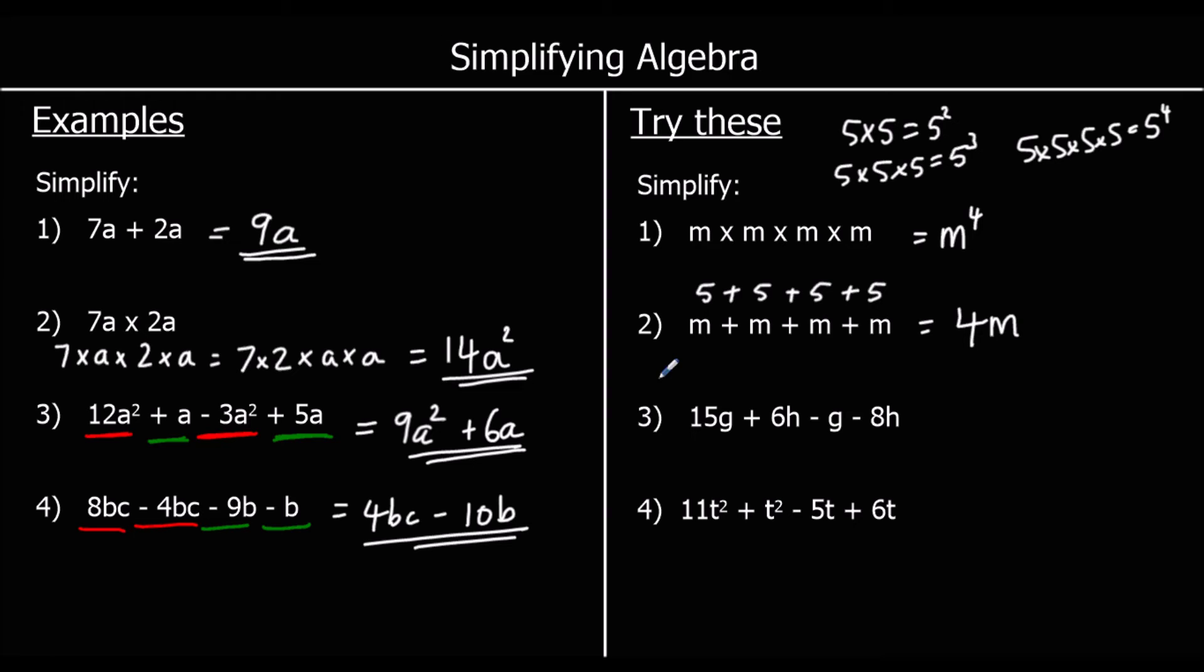Question 3, we're collecting like terms. So we've got G terms and H terms. We've got 15G take away 1G, which is 14G. And 6H take away 8H, 6 take away 8 is negative 2. So it's 14G minus 2H.